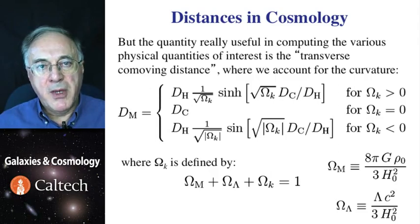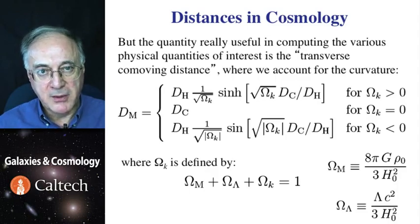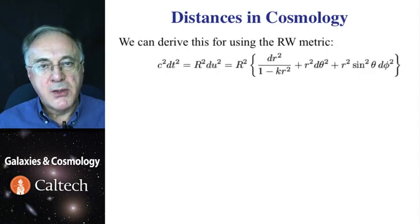Remember, omega curvature, so-called curvature density, does not really correspond to density of anything. It is just a quantity that makes the sum of all densities equal to 1, always. So, omega curvature is really 1 minus the omega of matter, omega radiation, and omega of cosmological constant.